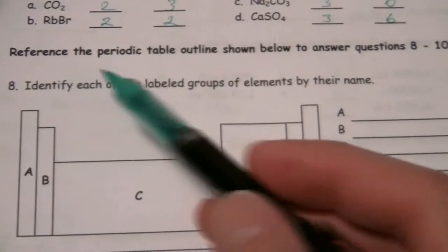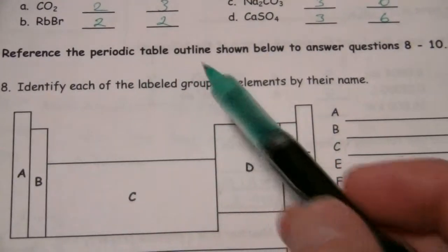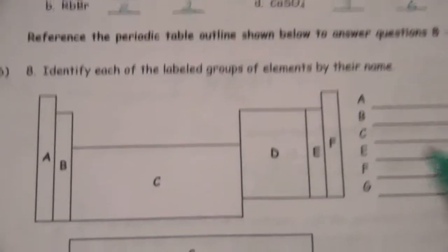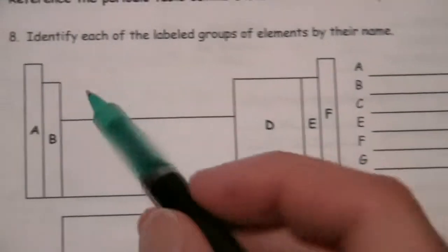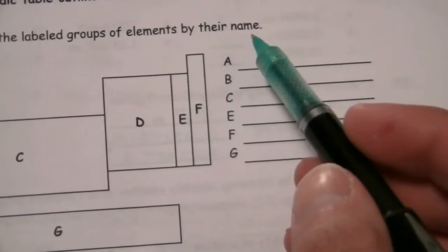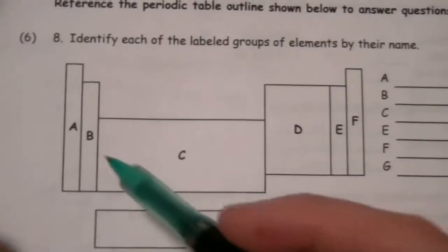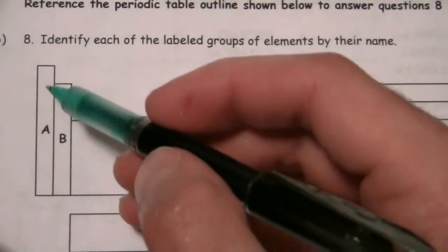Now for questions eight to ten, we're going to reference this periodic table outline here. And first, we're going to identify each of the labeled groups of elements by their name. So here are the labels. The first one, this is just recall.